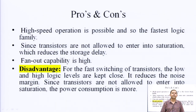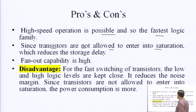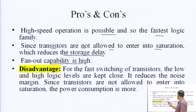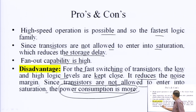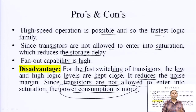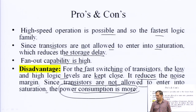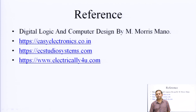The advantages of ECL include high-speed operation, since transistors are not allowed to enter saturation, which reduces storage delay, and very high fan-out capability. The disadvantages: for fast switching, the low and high logic levels are kept close, which reduces the noise margin. Also, since transistors are not allowed to enter saturation, power consumption is higher. So ECL has the advantage of high speed but the disadvantage of more power consumption. These are the references — thank you.